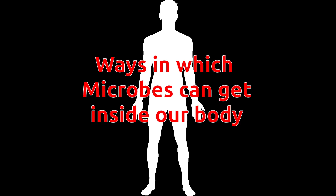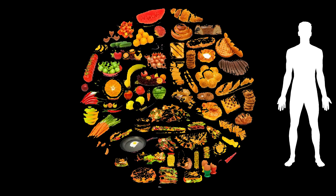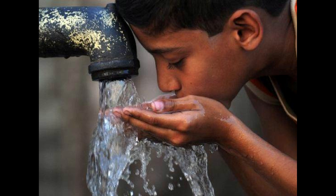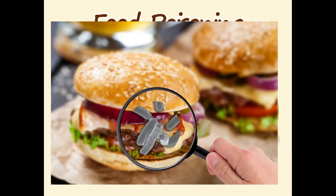Pathogens can only affect our health when they are inside our body. There are several ways by which microbes can get inside our body. Through the mouth: we eat food and drink water through our mouth, and any microbe mixed in food or contaminated water can also reach our body. Food poisoning is caused when pathogens enter the body through food.